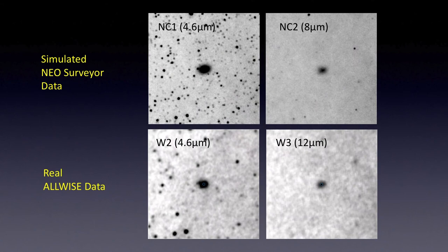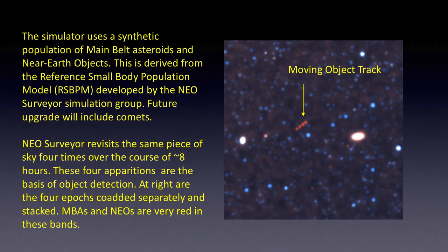Here is another patch of sky comparing the simulated NEO Surveyor data to actual ALLWISE data. Most importantly, the simulation contains a synthetic population of main belt asteroids and near-Earth objects. Seen here in red is a moving object tracklet in a set of simulated data that has gone through a simulated data reduction. You can clearly see the four different epochs of observation, and if you look carefully, you can actually see more than one track.